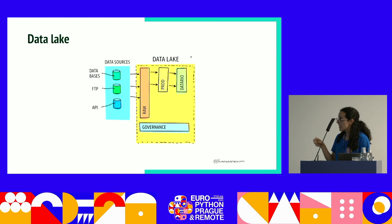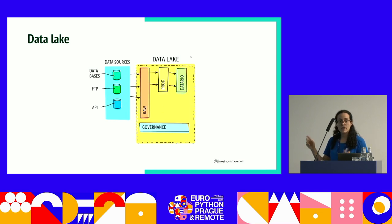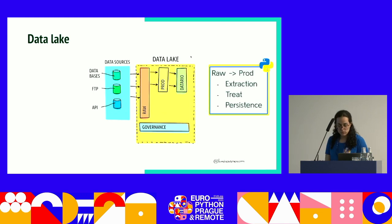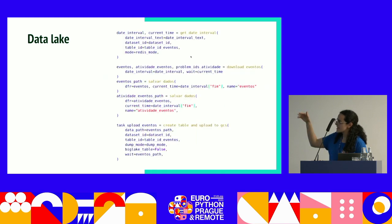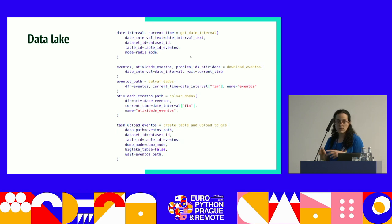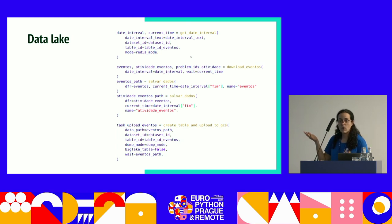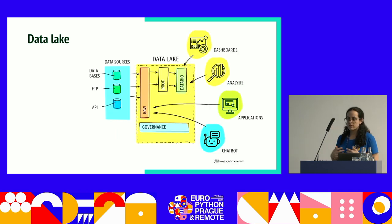After we get this information, we save it on our raw level — sometimes treated, sometimes not. Then we put it in our production level, and after that, we put some of this information on DataHill, which is our official data lake open to everyone. We use Python and Prefect — for those who know pipeline orchestration — for this process. This is an example pipeline: first we get the data interval of the data we want to extract, then we download it, save it locally, and upload it to the data lake. The code is bigger than this, but this is the pipeline written in Prefect. After treating and saving on the data lake, we can connect to dashboards, analysis, applications, and chatbots.